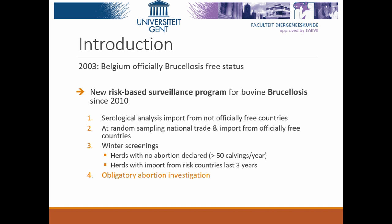To start, a little bit of history. In 2003, Belgium officially received the brucellosis-free status. Then seven years later, a new risk-based surveillance program was started to monitor bovine brucellosis in Belgium. This program was based on four pillars: serological analysis of imported cattle from non-officially-free countries; random sampling of national trade and imported cattle from officially free countries; a winter screening of herds with no declared abortions and herds with imported cattle from risk countries during the last three years; and the fourth and most important pillar — the obligatory abortion investigation of ruminant abortions in Flanders.